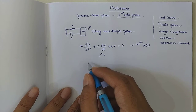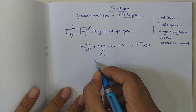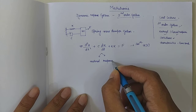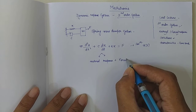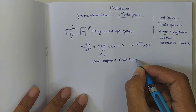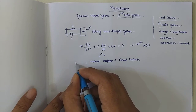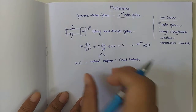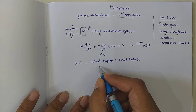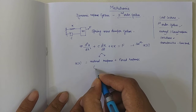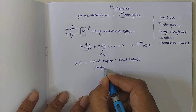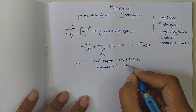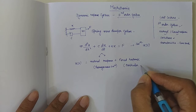The governing equation is: m d²x/dt² + c dx/dt + kx = F, where F is the external forcing acting on the system. We are interested in how x behaves with time. This is a forced response form, so we seek the solution as natural response plus forced response individually, then add the solutions. The natural response comes from the homogeneous solution, and the forced response comes from the particular solution.